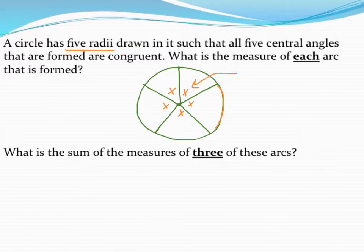Well, since I know each of these angles are equal to each other and a circle has 360 degrees in it, I'm going to take 360 and divide that by five to find out that each angle is 72 degrees.